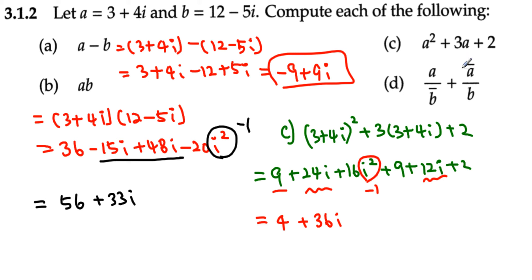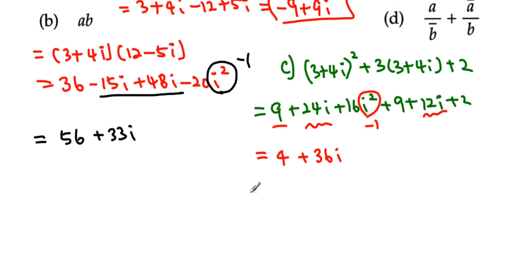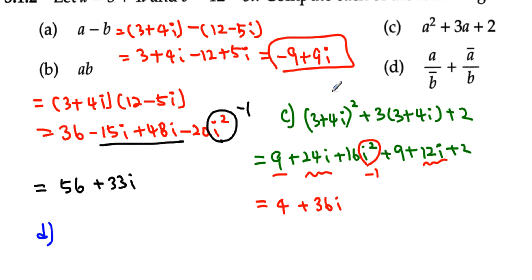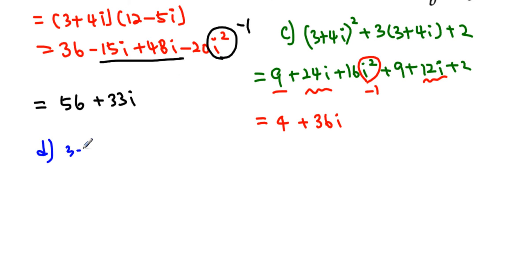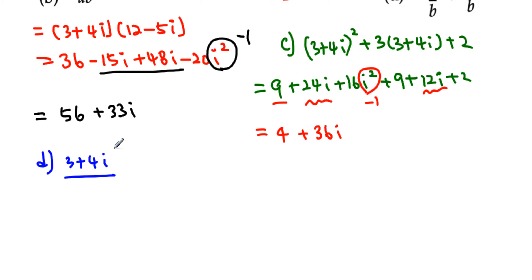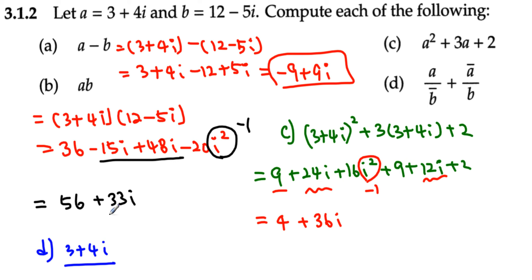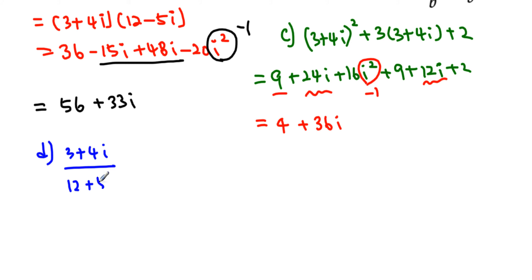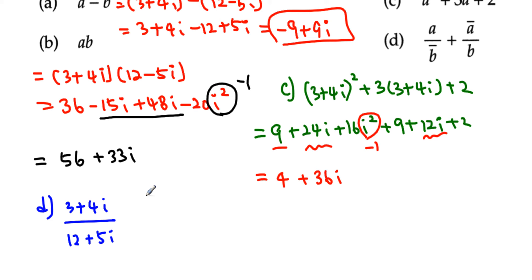For part d, the bar on top is called the conjugate. We have a, which is 3 plus 4i, over the conjugate of b. Since b is 12 minus 5i, the conjugate of b is 12 plus 5i. Plus the conjugate of a, which is 3 minus 4i, over b, which is 12 minus 5i.